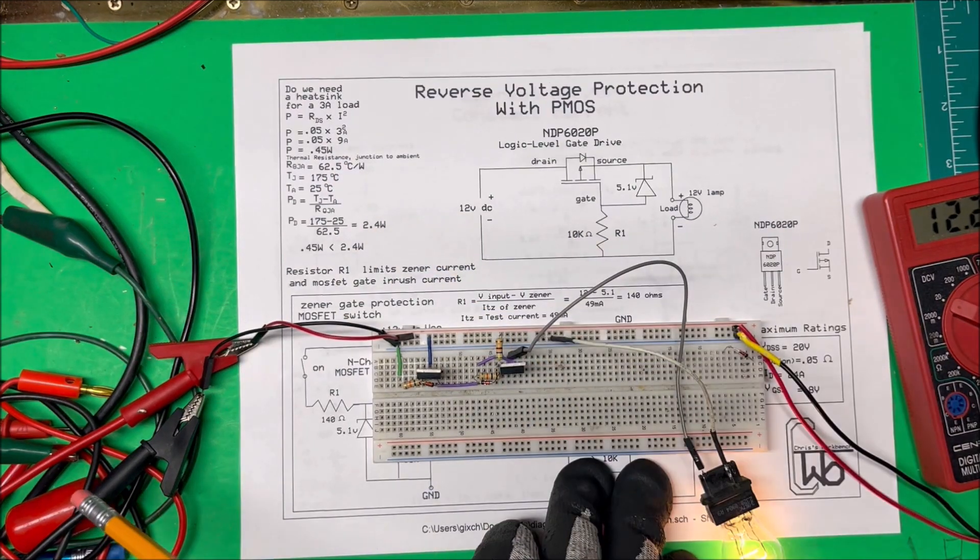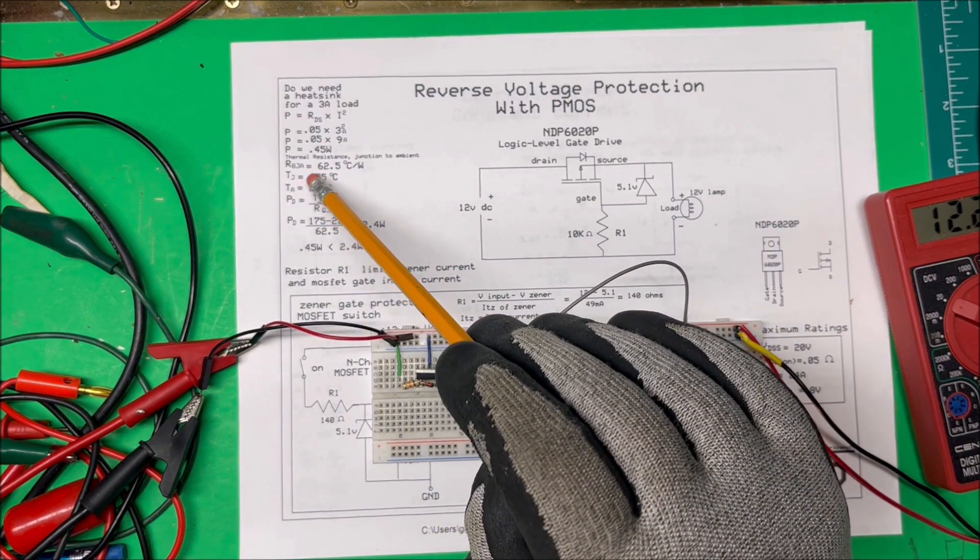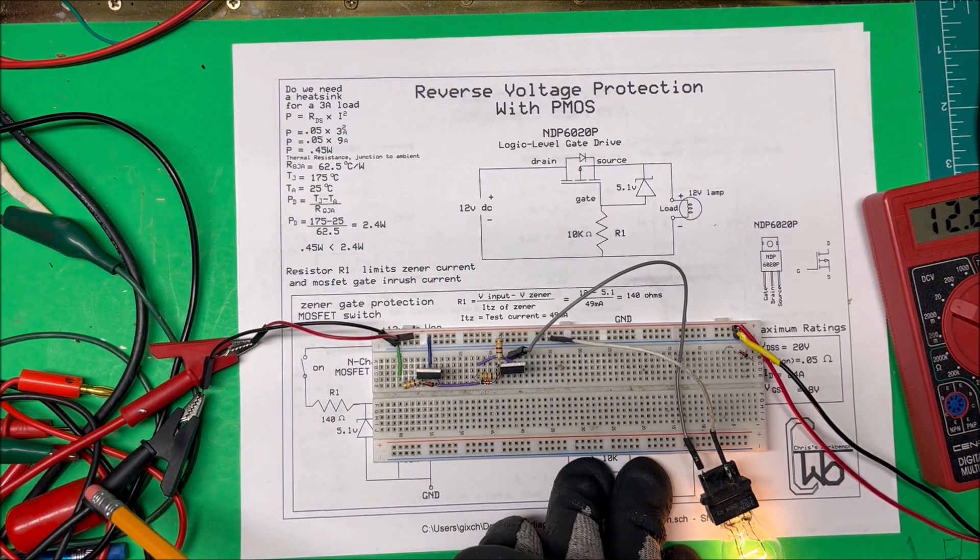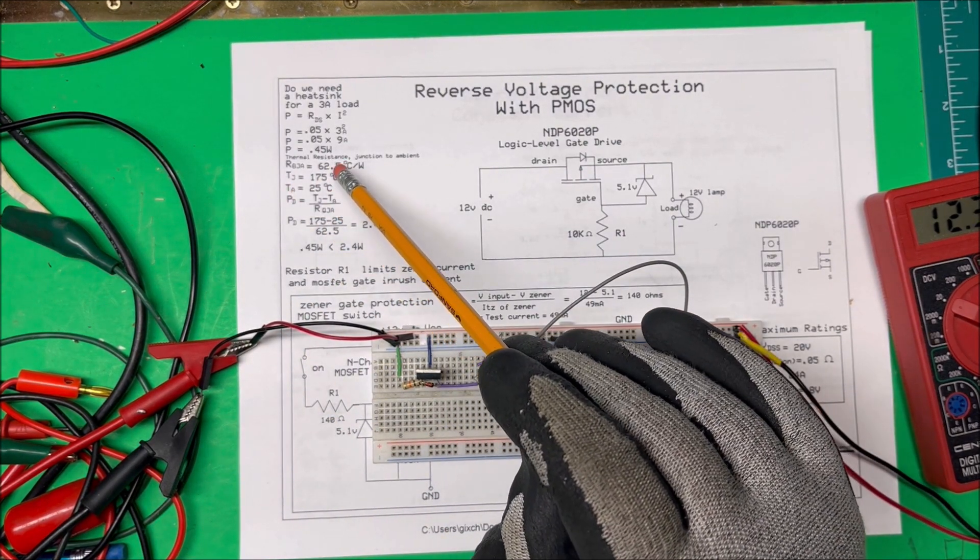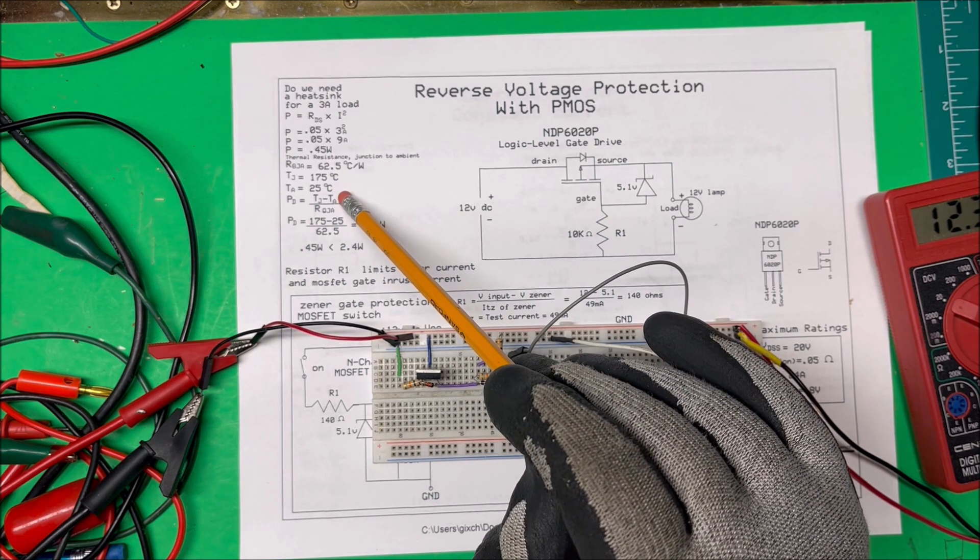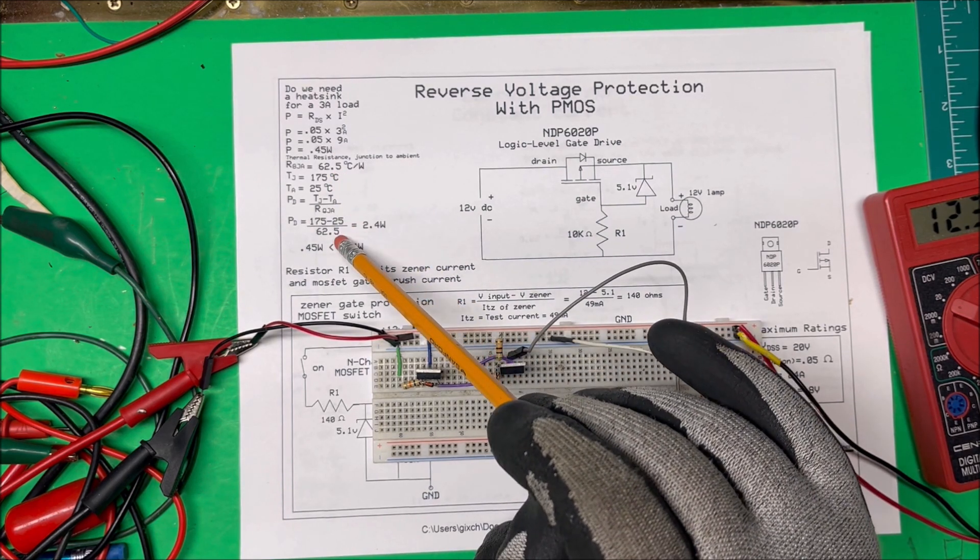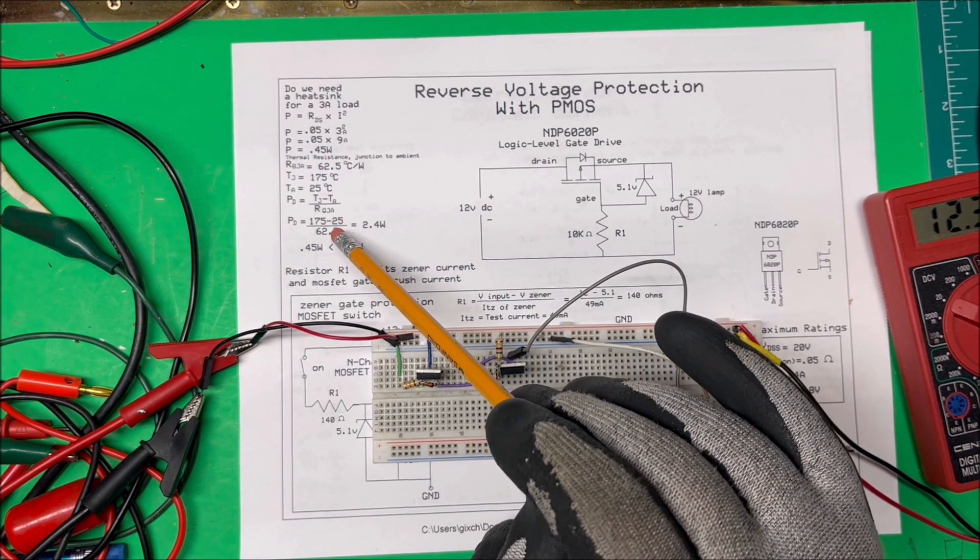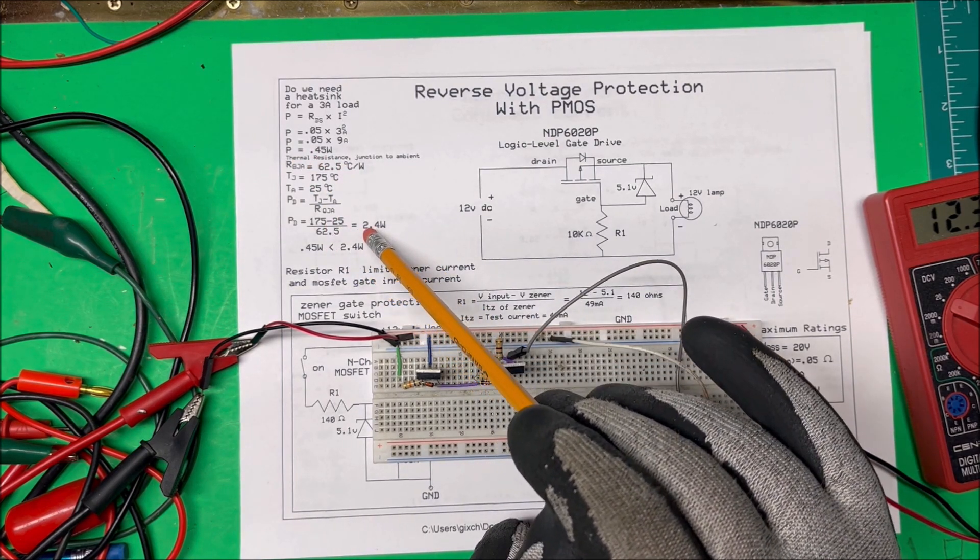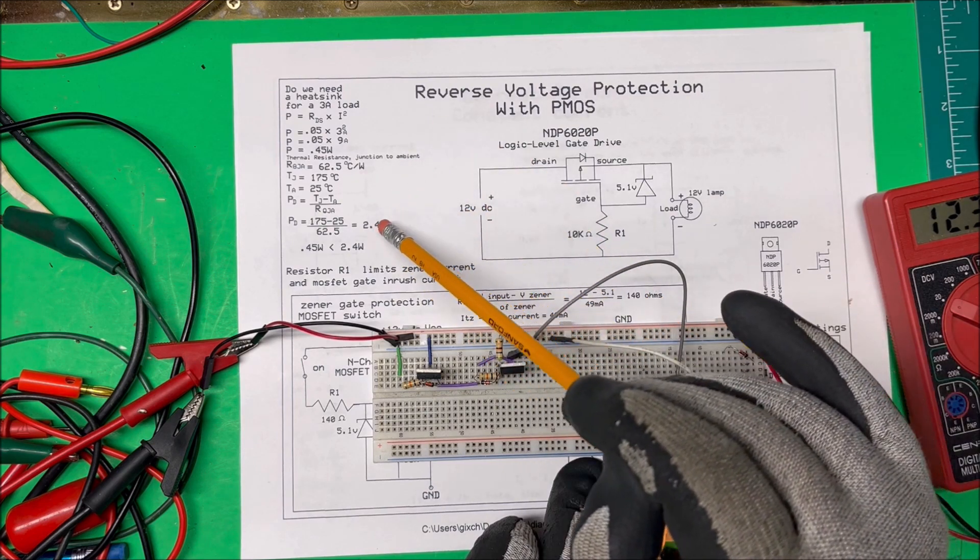And the TJ, which is our junction temperature, can be 175 degrees centigrade, and the ambient is say 25 degrees. So the power dissipated is going to be 175 minus 25, divided by the R-theta-JA. When we do that, it comes out to 2.4 watts.